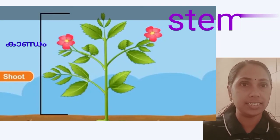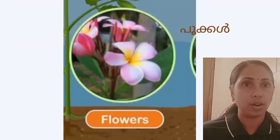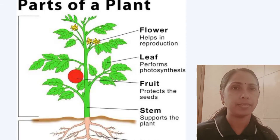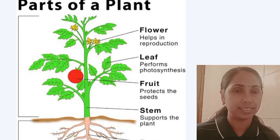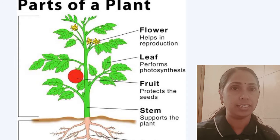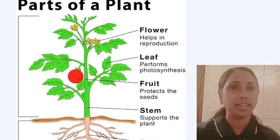This stem bears branches, leaves, flowers, buds, fruits and seeds. This stem uprights the plant above the soil.